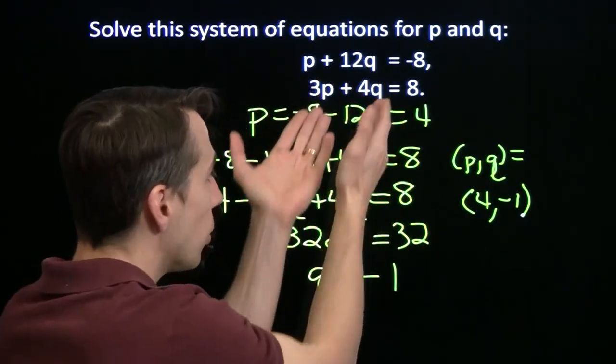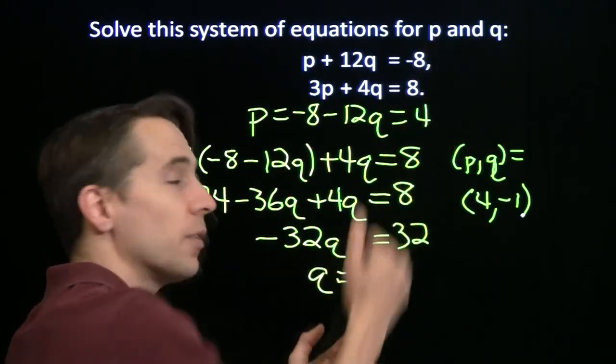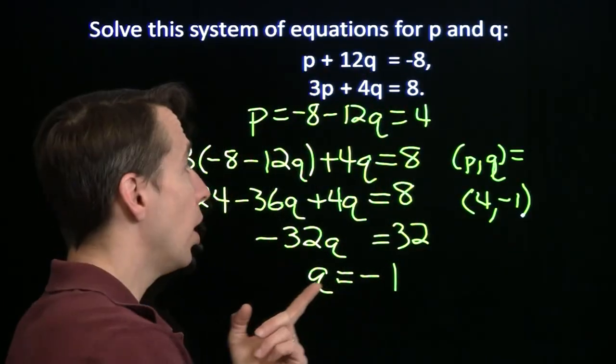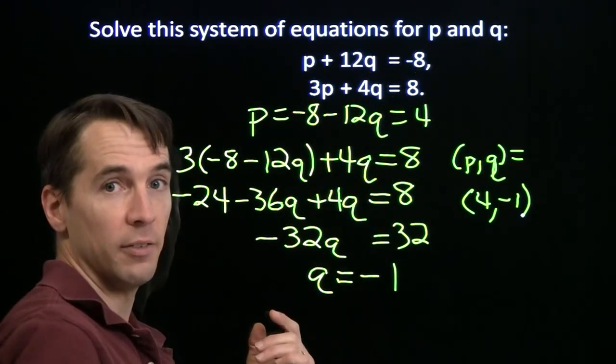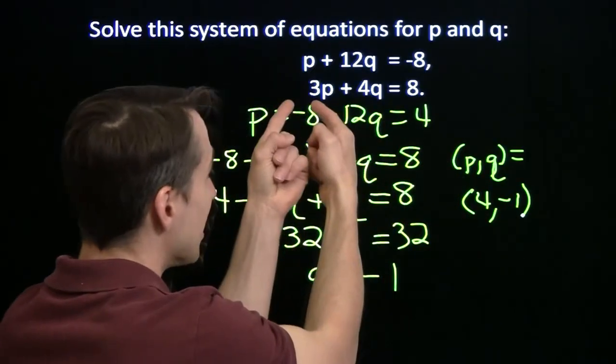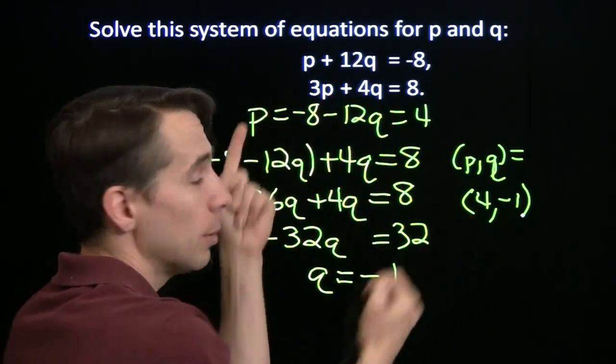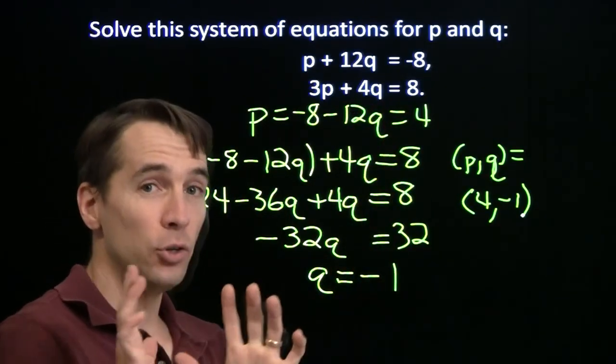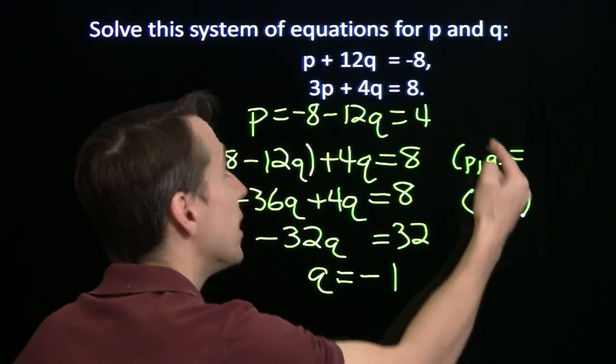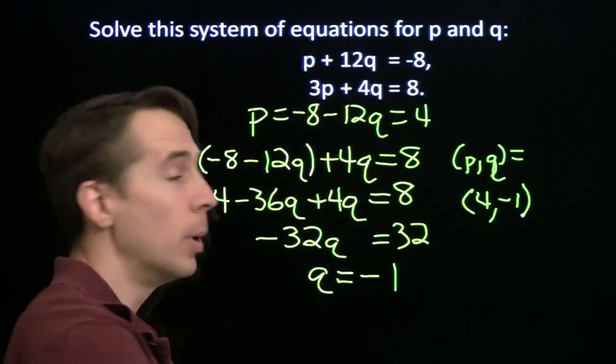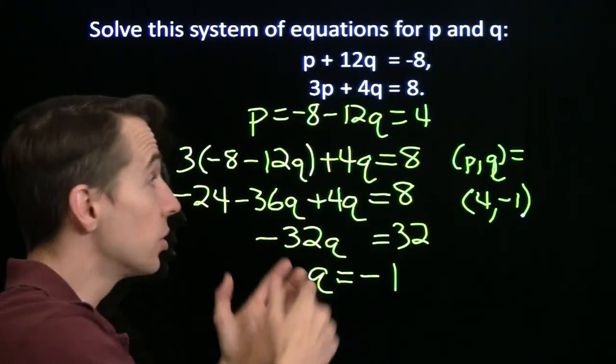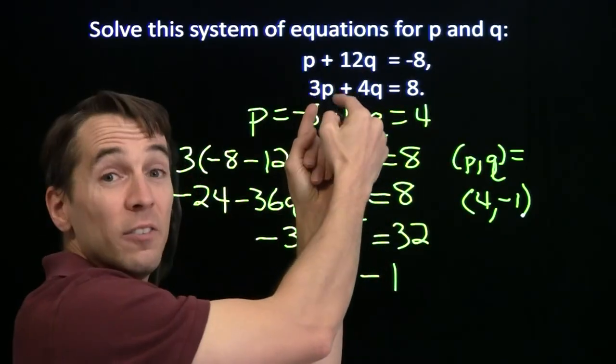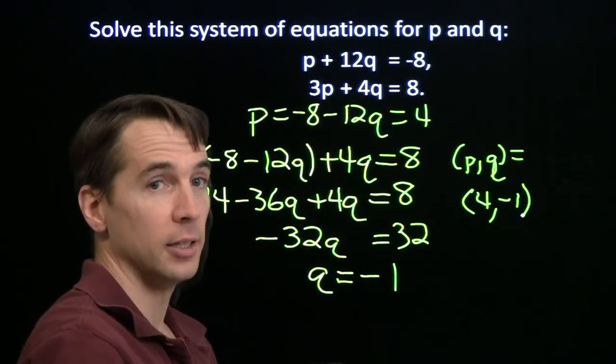And we can test it. We'll go ahead and put these back in these two equations. Make sure our answer does indeed satisfy both of these equations. Put in 4 for p. That's just 4. 12 times negative 1 is negative 12. 4 minus 12 is negative 8. So that one works. Now we're also going to put this into this second equation here. 3 times 4 is 12. 4 times minus 1 is minus 4. 12 minus 4 is 8. Now notice that when we're testing these, we go back to the very original equations. We don't test them by sticking them in one of these equations, because we might have made a mistake. We take our final answer and substitute it into the very original problem to test it.